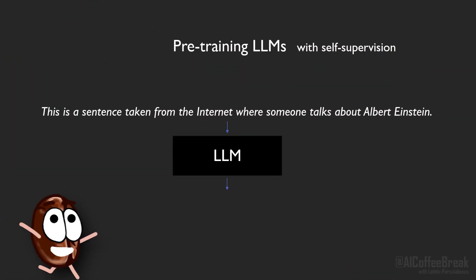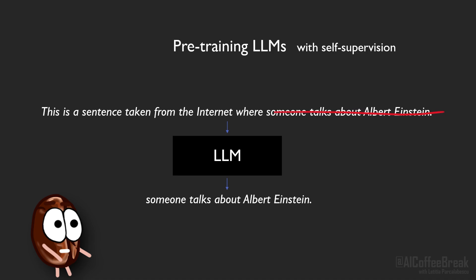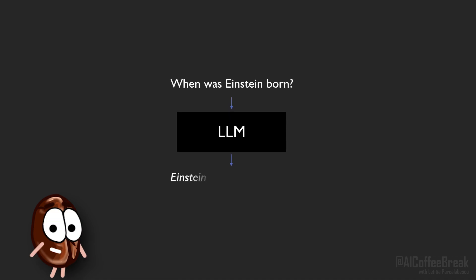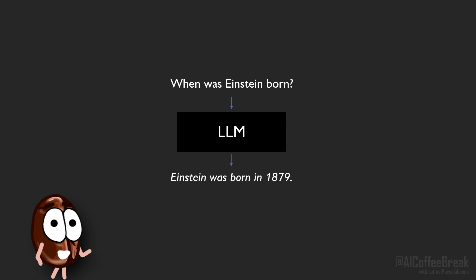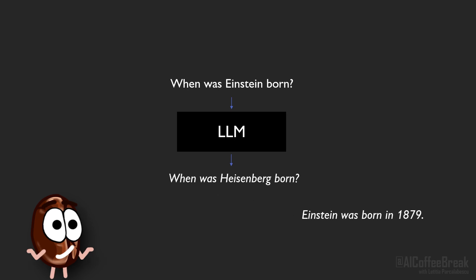LLMs usually pre-train with self-supervision. We give them sentences from large-scale internet text, delete the end, and let the LLM auto-complete a sentence. After pre-training, LLMs can talk about lots and lots of things, but they do not always continue the input the way we want to. To the question "when was Einstein born," an LLM could respond "in 1879," but also the LLM could respond with another question, because enumerations of questions are also good continuations to questions.